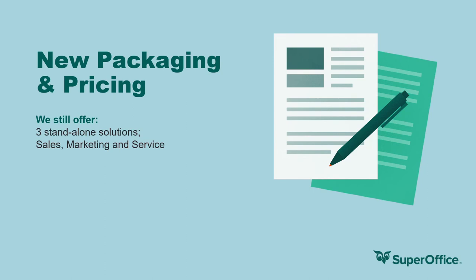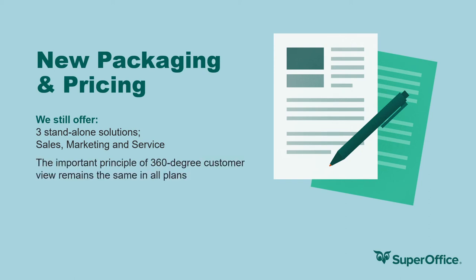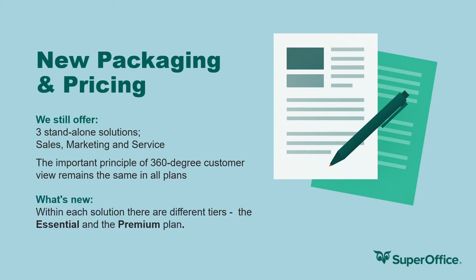We still offer three standalone solutions in Sales, Marketing, and Service, and the important principle of the 360-degree customer view remains the same in all plans. What's new is that within each solution there are different tiers: the Essential and the Premium plan. The user plans contain CRM functionality that is user role-oriented and configurable, consisting of different sets of features based on what tier a customer has. All solutions can add different add-ons like AI that can be made available for all your users. If you need more details around the new product packaging, get in touch with your SuperOffice representative. The main thing to remember is: whatever feature you use today, you will be able to use tomorrow.